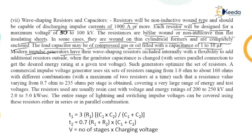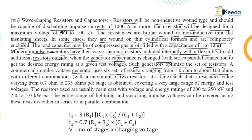In modern impulse generators, wave shaping resistors are included internally with flexibility to add additional resistors outside. When the generator capacitance is charged in series-parallel connection, such generators optimize the set of resistors. A commercial impulse voltage generator uses six sets of resistors ranging from 1 ohm to 160 ohms with different combinations. This is all about the Marx circuit, that is the impulse voltage generator.